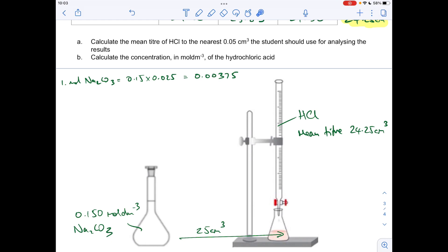Don't be thrown by the fact that it was placed in a 250 cm cubed volumetric flask—only 25 was used in the titration. So moles of sodium carbonate comes out at 0.00375.